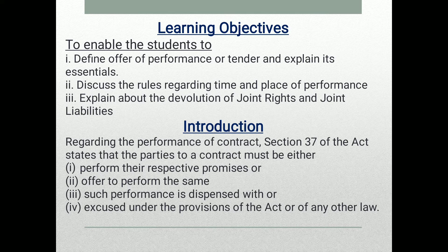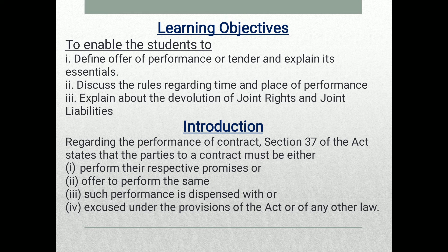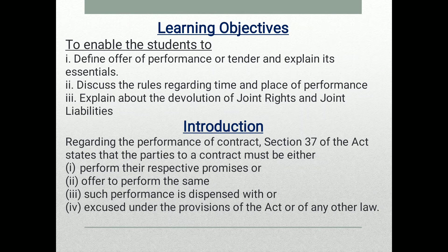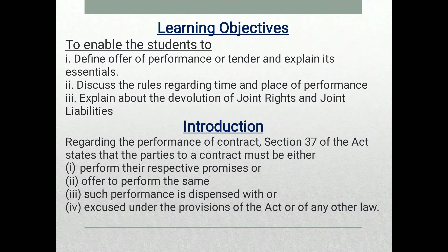In this class we are going to see what is meant by a contract and performance of contract — how agreements are concluded. Regarding the performance of contract, Section 37 of the Act states that the parties to a contract must either perform or offer to perform their respective promises.